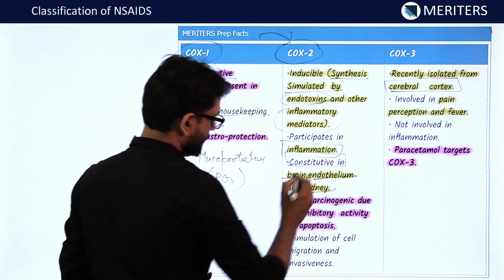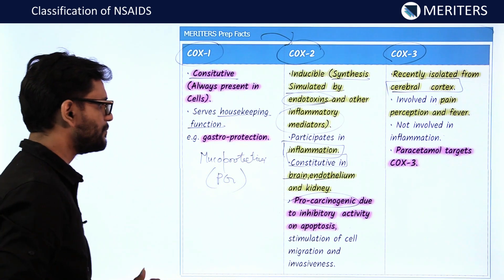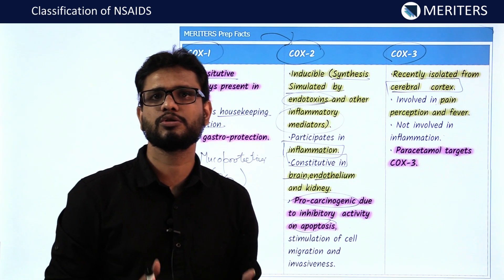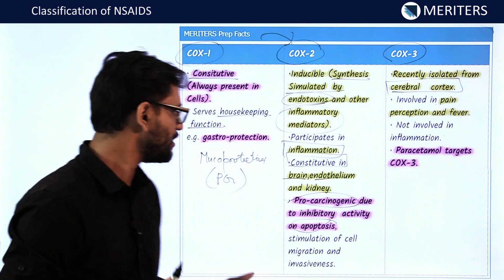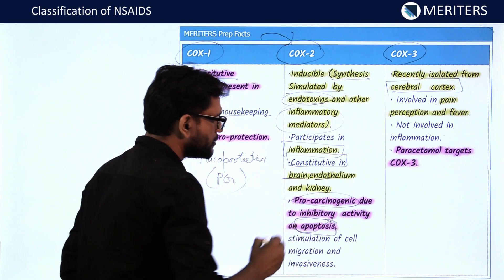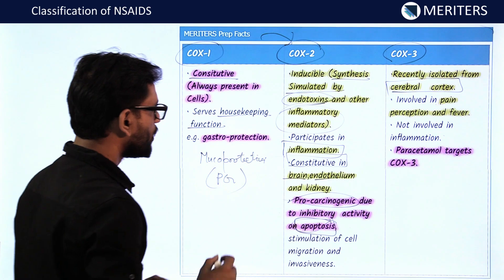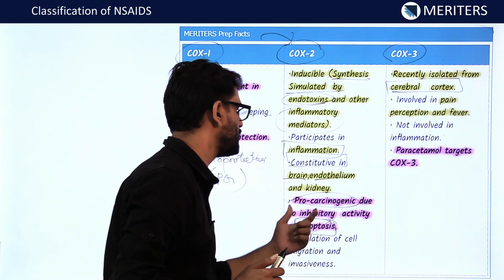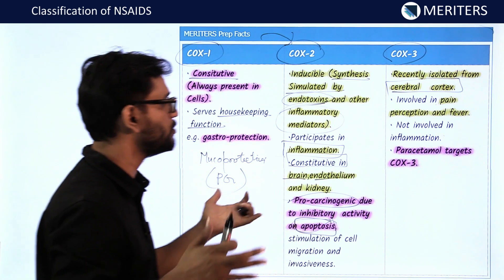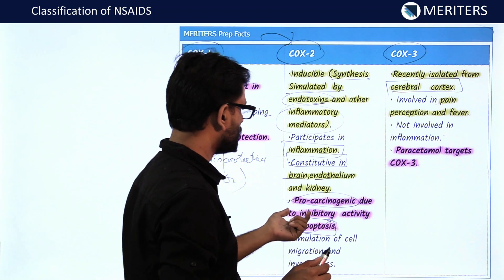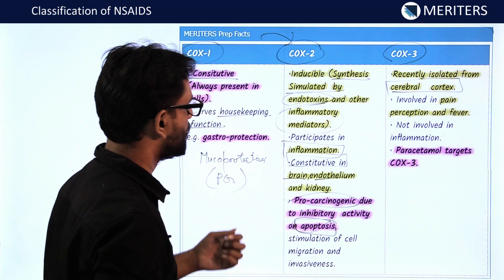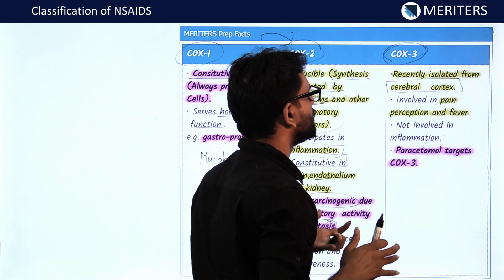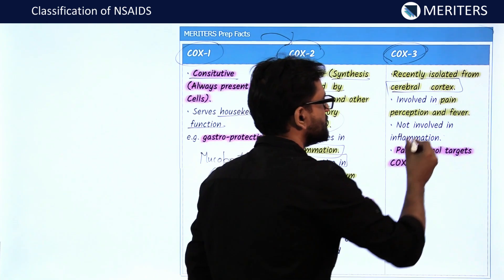COX-2 enzymes are also constitutively present in the brain, endothelium, and kidney. COX-2 is also pro-carcinogenic — it inhibits apoptosis, which is the cell's self-suicide mechanism that protects the body from carcinogenesis. When COX-2 enzymes inhibit apoptosis, they increase the chances of carcinogenesis, acting as pro-carcinogenic.